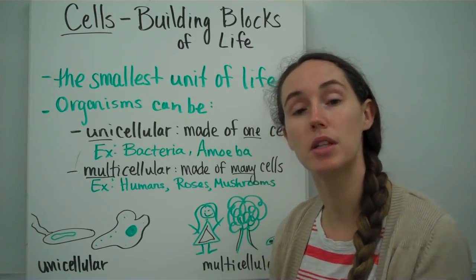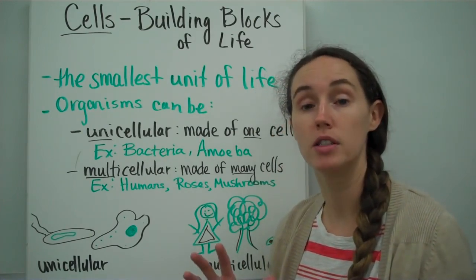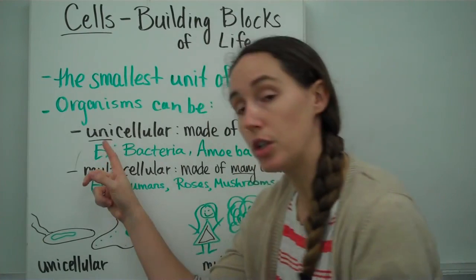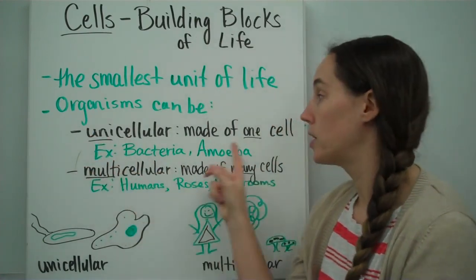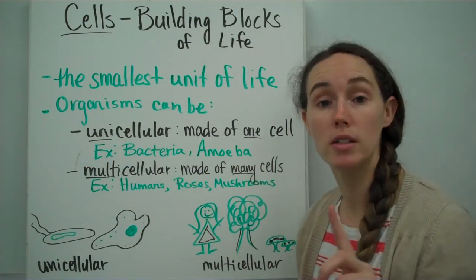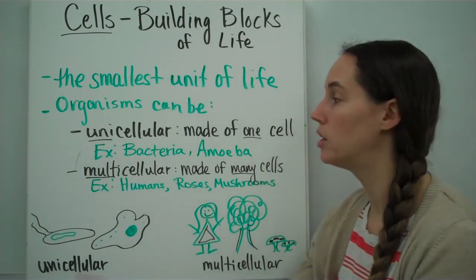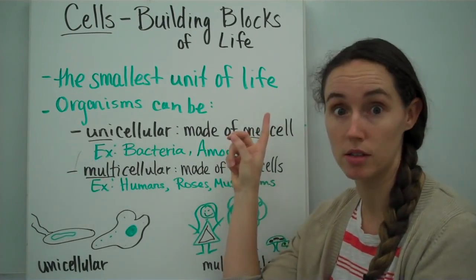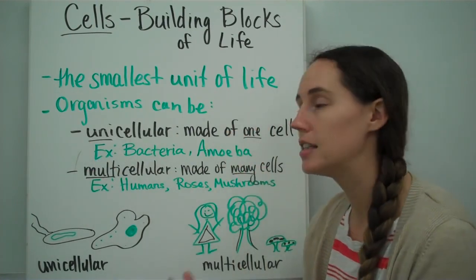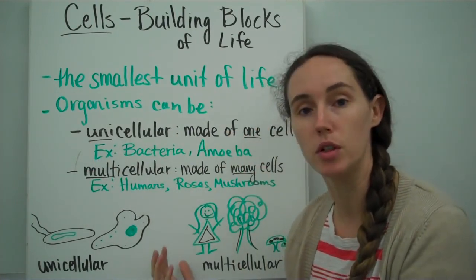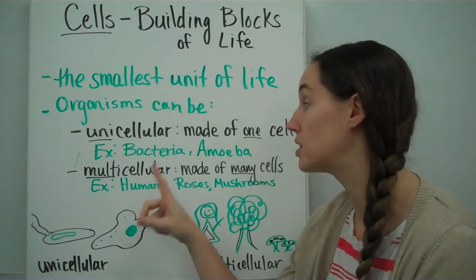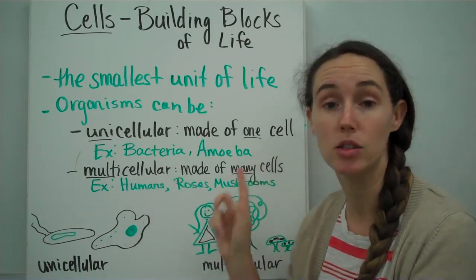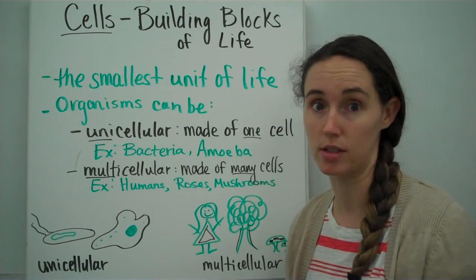Organisms can be made of different numbers of cells. There are unicellular organisms that are only made of one cell. Uni is a root word that means one, so that should be easy to remember. Some examples of unicellular organisms are bacteria, and even an amoeba is only made of one cell.